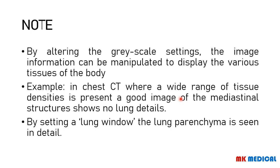By altering the grayscale settings, you can manipulate the image to display different types of tissues. For example, in a CT scan of the chest, you have a wide range of structures: lung parenchyma, blood vessels, lymphatics, lymph nodes, alveoli, the heart, and more. If you set the computer to show the lung window, you can see the lung parenchyma in greater detail. But if you set it to the mediastinal window, you won't see any lung detail at all.